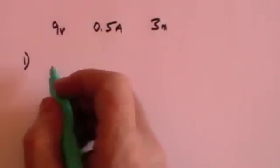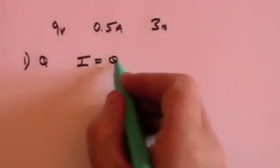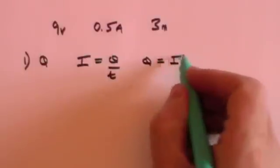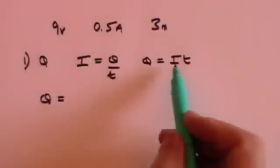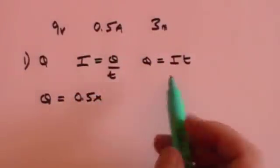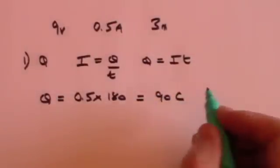First, what is the total charge? Well we remember that the definition of a current is charge divided by time so charge is equal to current times time and so charge is going to be equal to the current which is 0.5 amps times the time which is 3 minutes that has to be converted into seconds that's 180 seconds and that's 90 and the unit of charge is coulombs so you're using 90 coulombs of charge when you use the razor for 3 minutes.